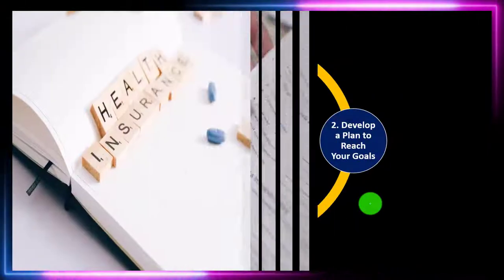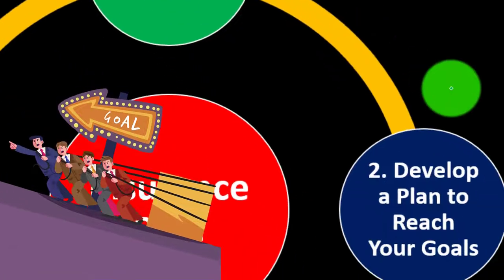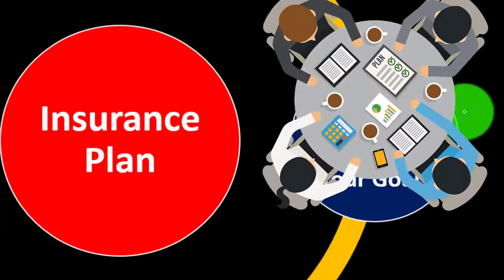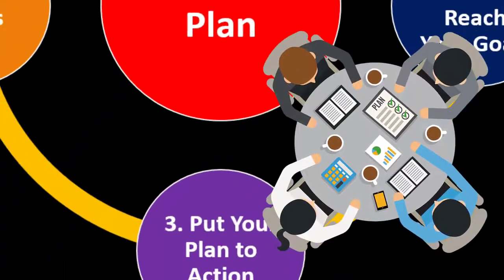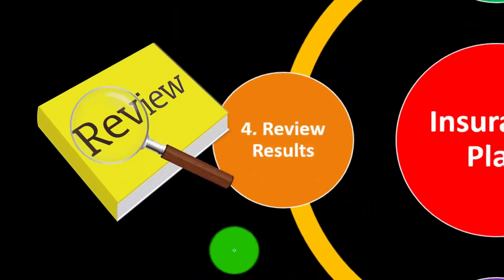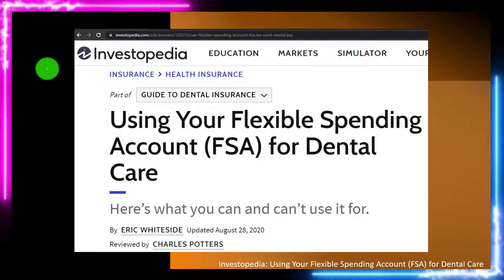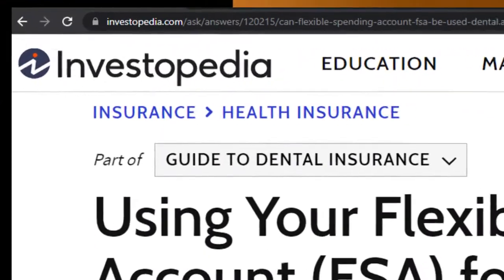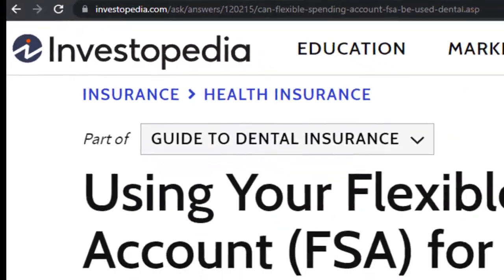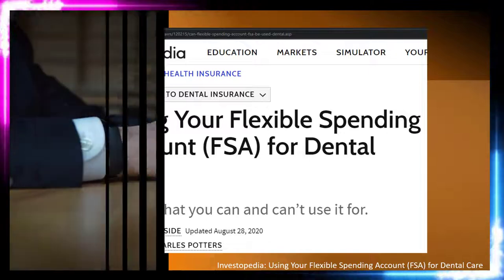Put a formal process in place — something like setting goals, developing a plan to reach them, putting the plan in action, reviewing the results, and repeating the process periodically. Most of this information can be found from Investopedia, using your Flexible Spending Account, the FSA, for dental care, which you can find online.